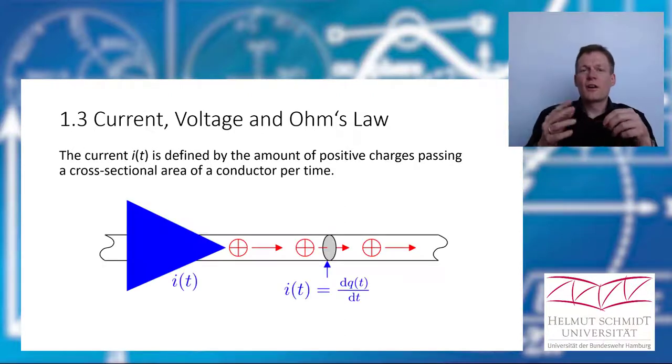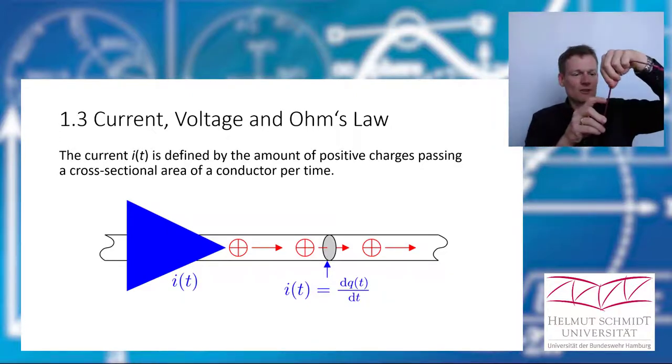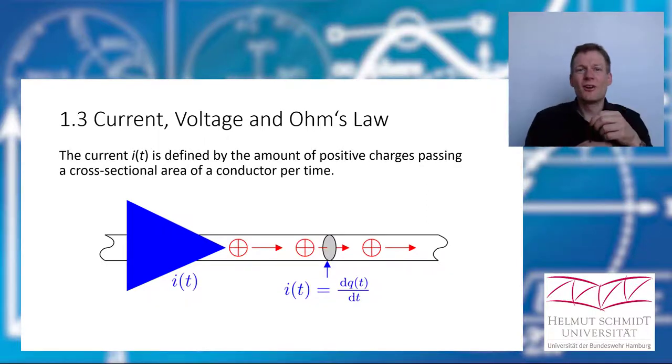The current is just defined by the amount of charges traveling through a cross-section area per time. That's all.